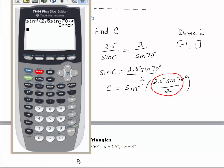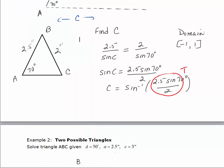So we'll quit out of there. We'll click 2.5 times sine of 70 degrees divided by 2 and hit enter. And you can see we get 1.17 and so that's the problem, this value is too big. And so there is no triangle.